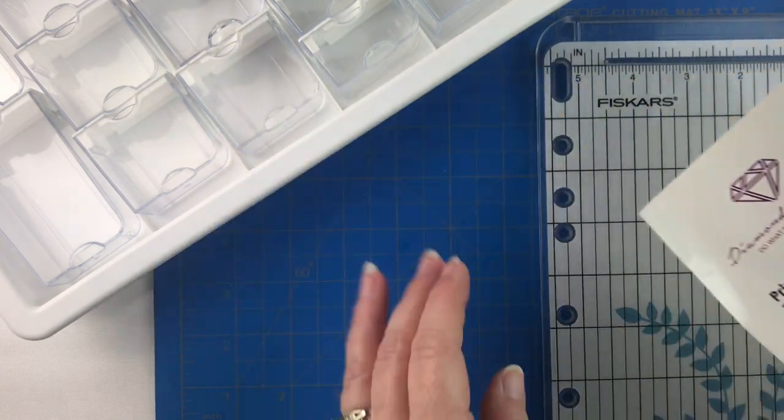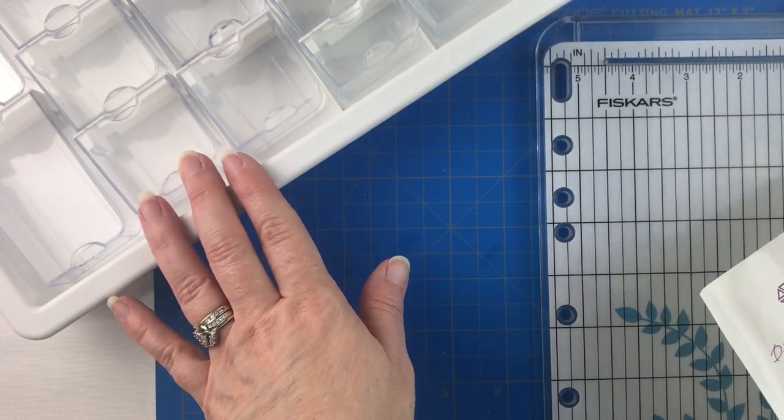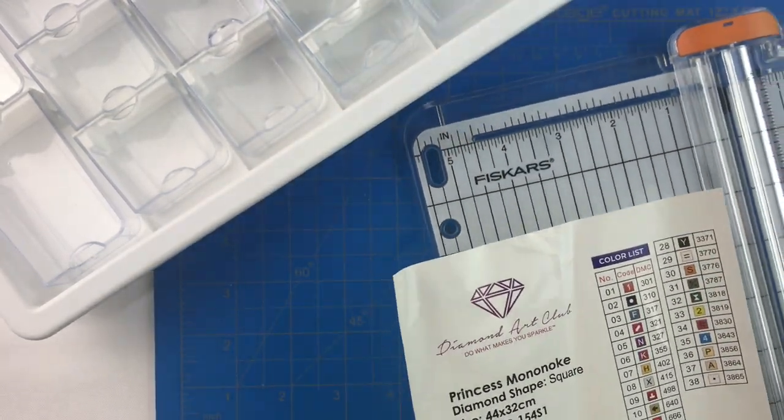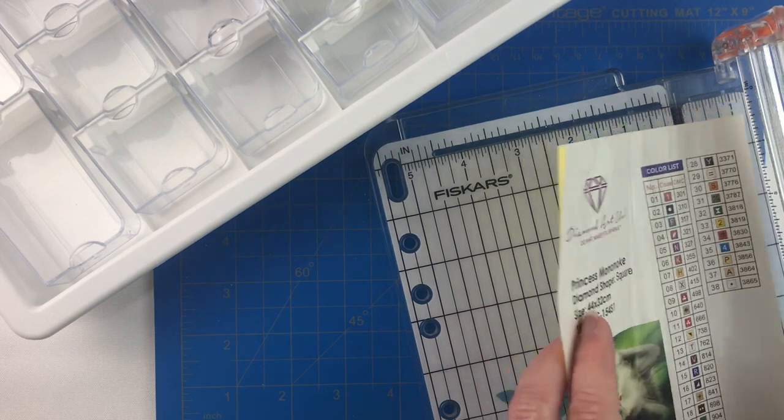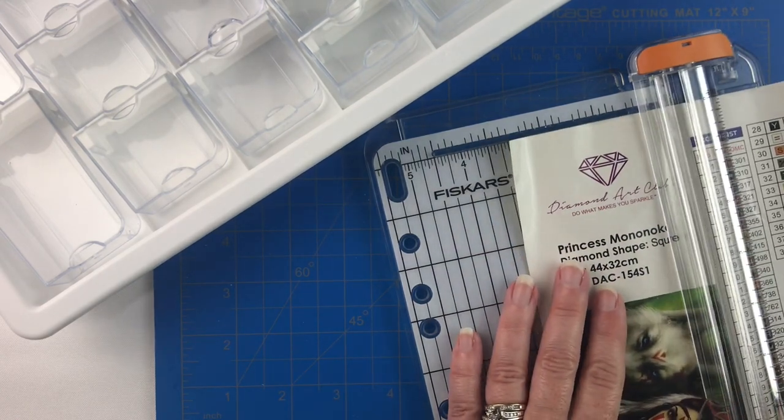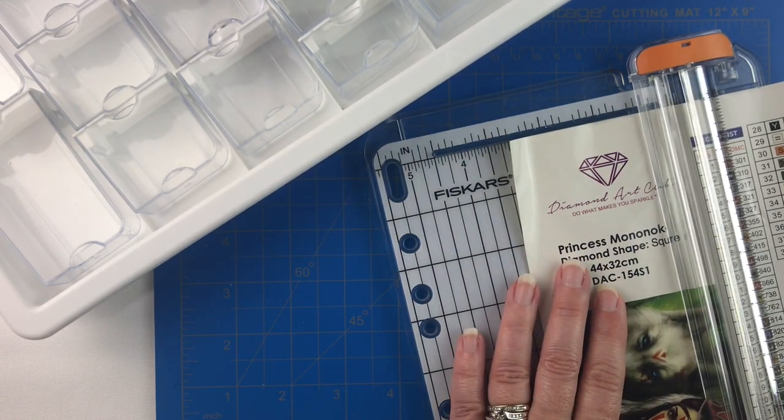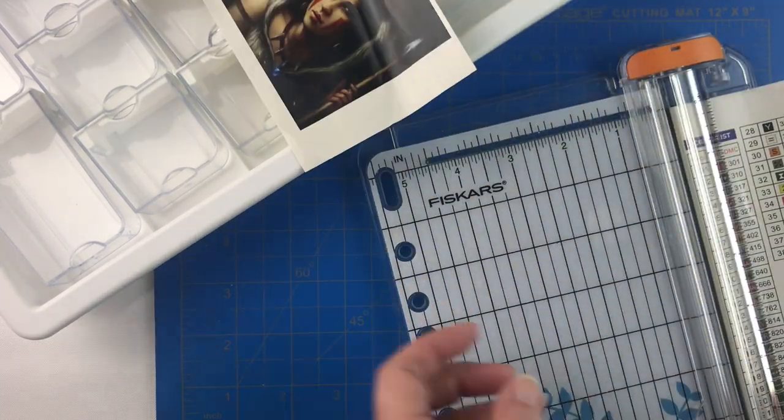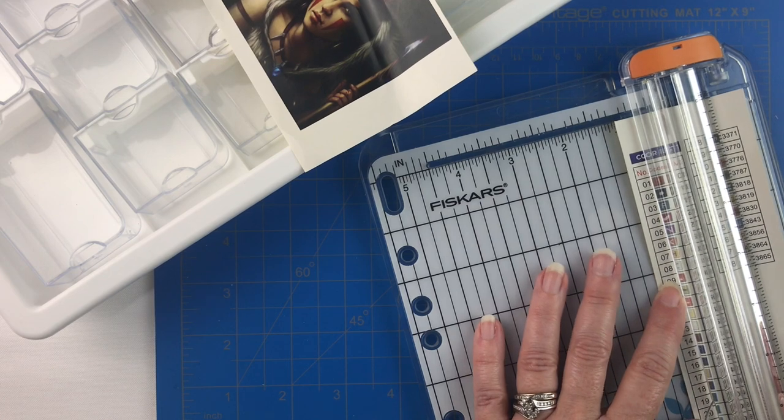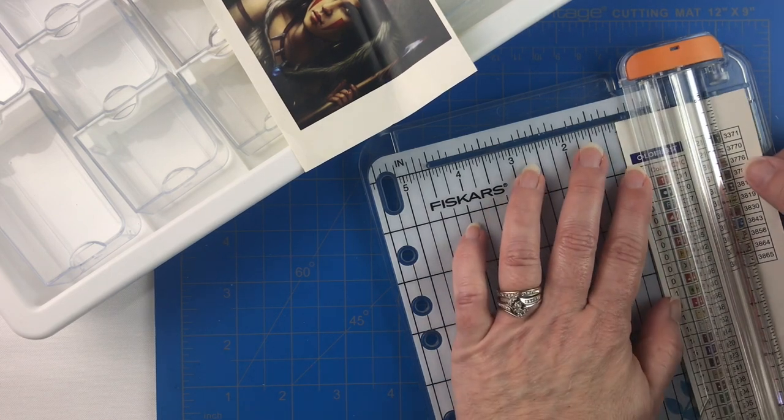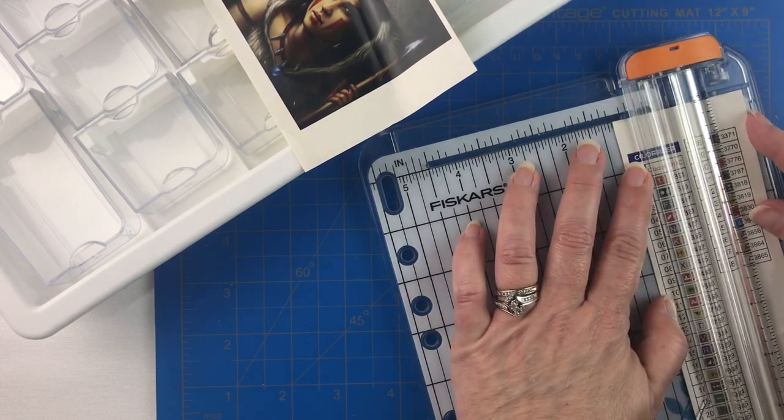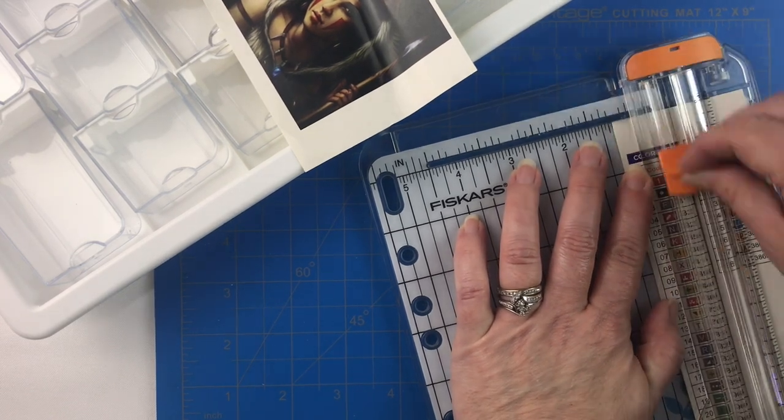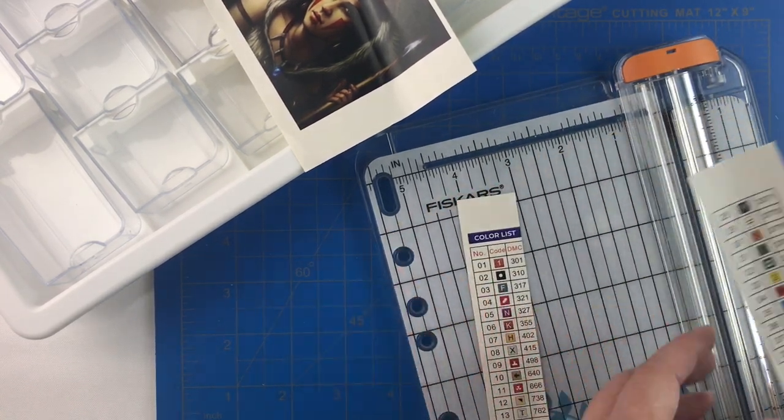I'm going to be using my Elizabeth Ward storage containers to kit this up, but first I need to use my little paper cutter so that I can cut my stickers because this kit was purchased before Diamond Art Club started cutting them for us. So let me get everything lined up here and get some of these cut.